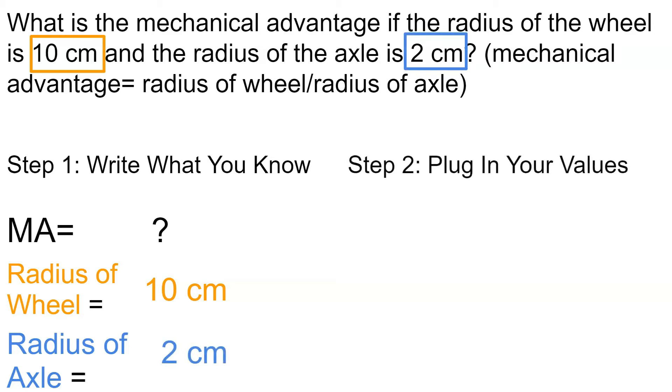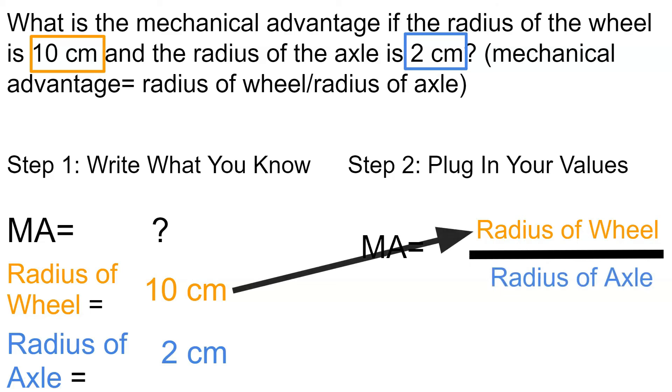And then same thing, plug in our values. Mechanical advantage is equal to the radius of the wheel divided by the radius of the axle. So we plug in our values. We take that 10 cm, plug that in.